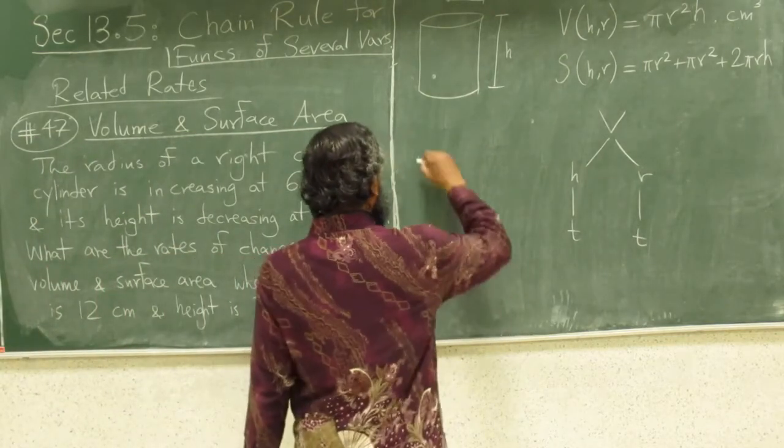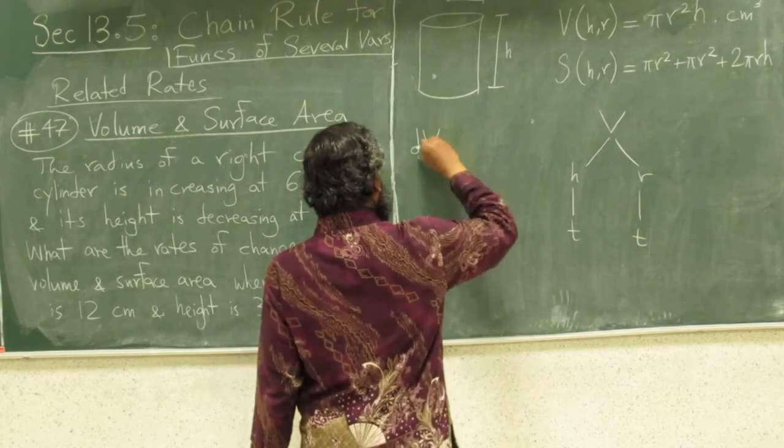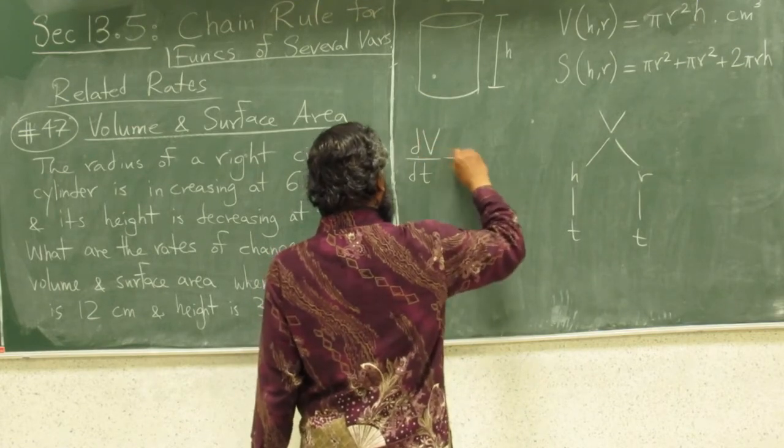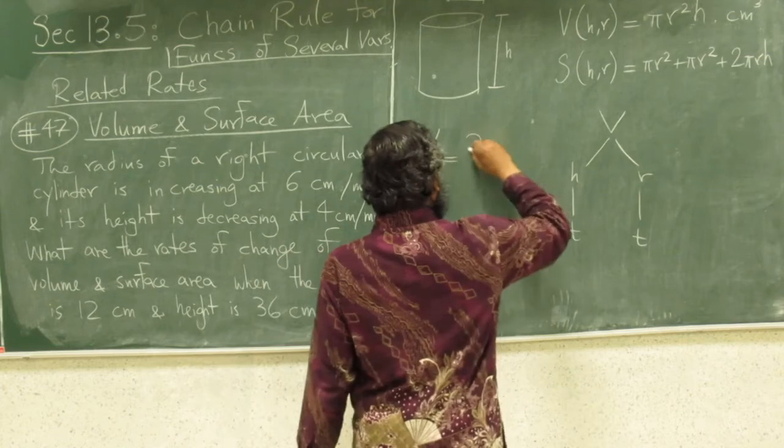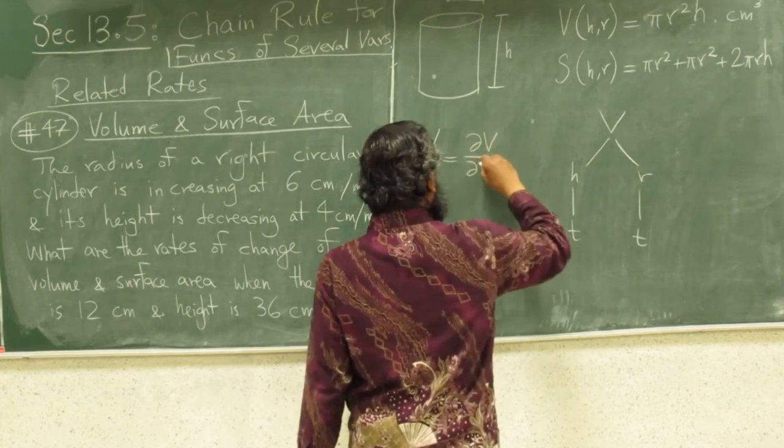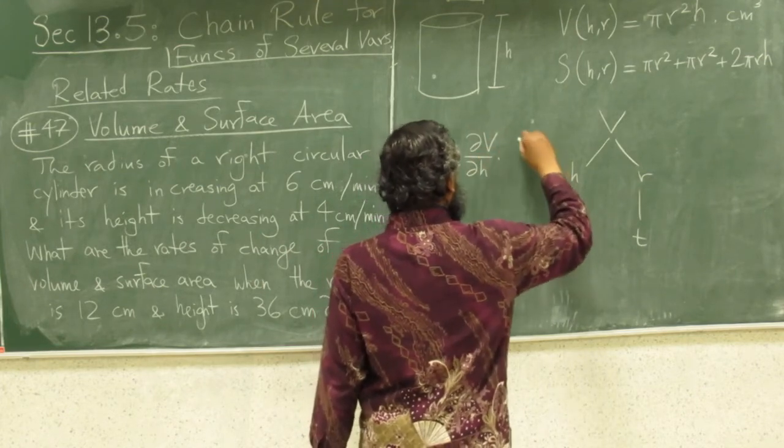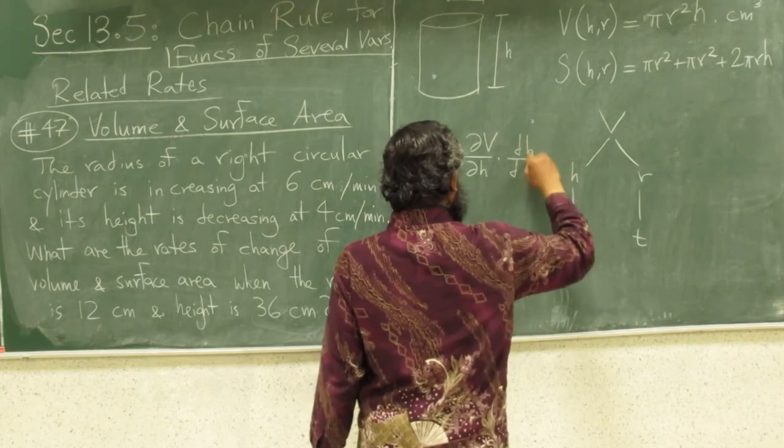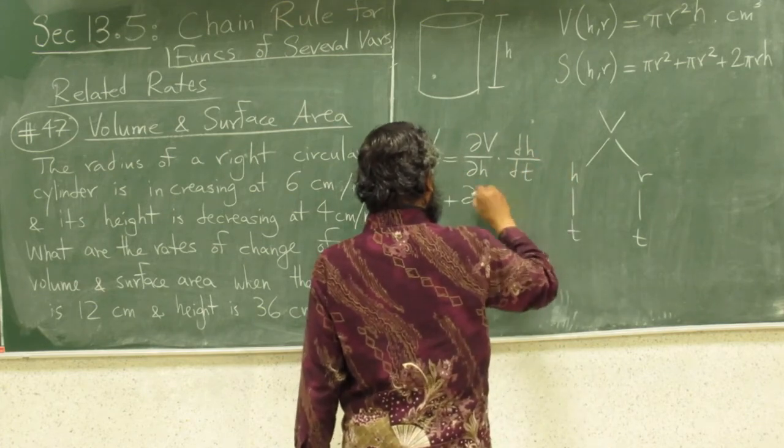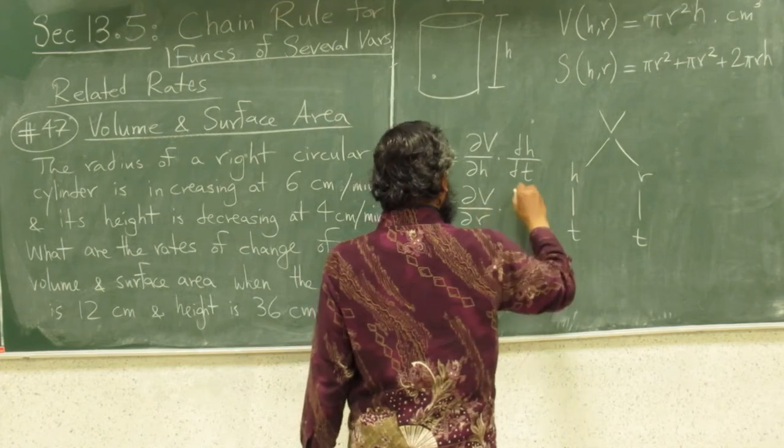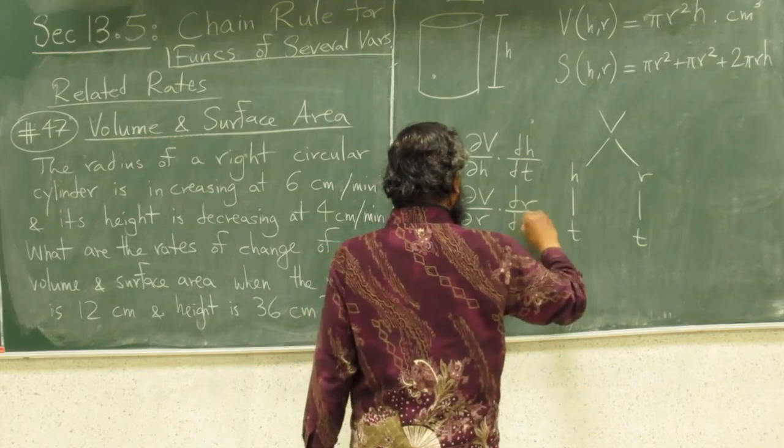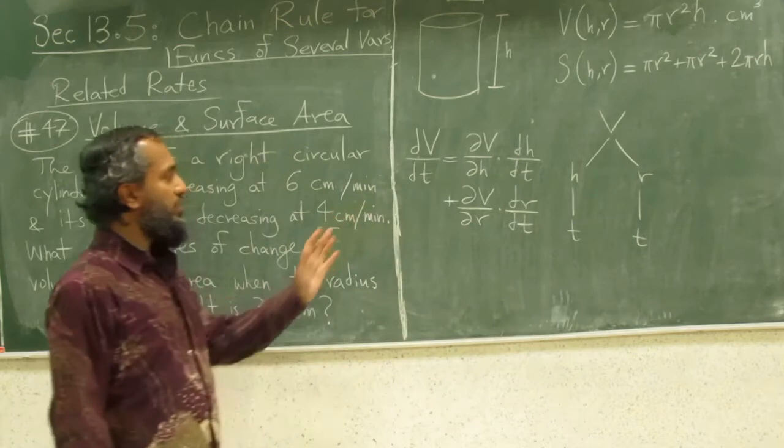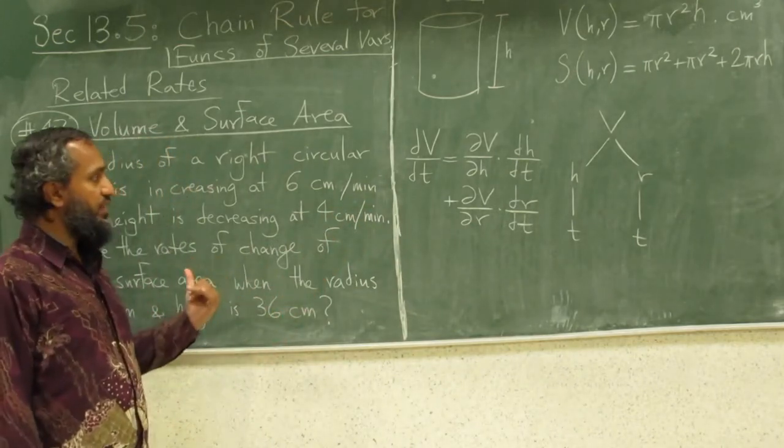The equation would be dv/dt equals partial of v with respect to h times dh/dt plus partial of v with respect to r times dr/dt. This is just using the basic chain rule that we have seen in the previous videos.